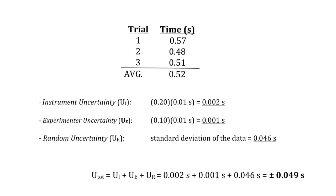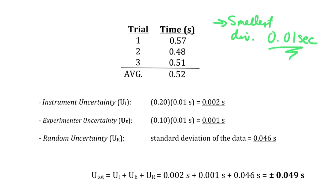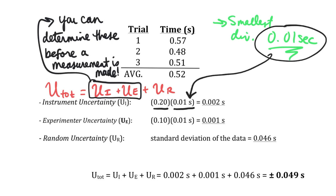Let's take a look at an example. Consider time data collected for a ball dropped from a given height over three trials using a stopwatch whose smallest division is one one-hundredth of a second. It's important to note that the smallest division of this instrument is 0.01 seconds, because the instrument uncertainty and experimenter uncertainty are both dependent on that smallest division — meaning you can determine these uncertainties before a measurement is even made.